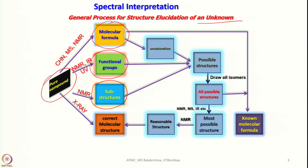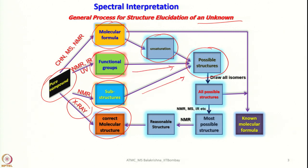For example, NMR can tell us whether we have a methyl group, an aromatic group, or a carboxylic group. X-ray crystallography, if a solid compound can be crystallized to give a single crystal suitable for analysis, provides the complete molecular structure. Information about unsaturation comes from the molecular formula, allowing us to draw all possible isomers, and then we can return to NMR, mass, and IR data to arrive at the most appropriate structure.